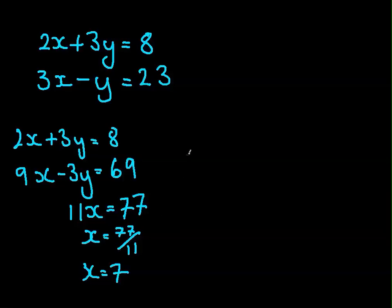So if I just go over that again, we multiply the bottom equation by 3 to get 3y at the bottom. Once we did that, when we multiply, we multiply all the terms. So we've got 9x minus 3y equals 69. And then we had the 3y's, so we added them up and eliminated both of them. We added everything else up. We've got 11x equals 77. We rearranged that to find x, and we got 7.